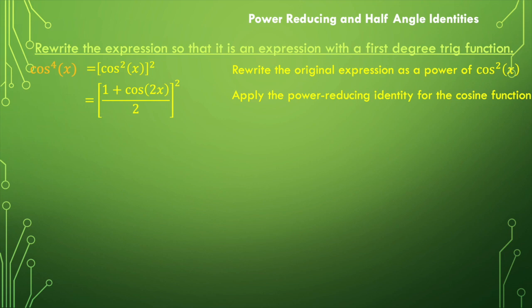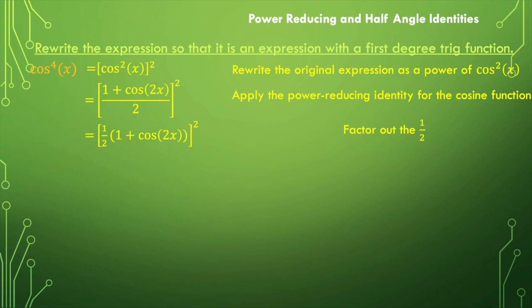Next, we're going to factor out the one-half. We're taking this expression and dividing it by 2, which is the same as multiplying by one-half. So we rewrite it in that form — that will make our expansion a little easier. If we distribute, we'd have one-half plus cosine of 2x over 2, which is the same thing in a slightly different form.